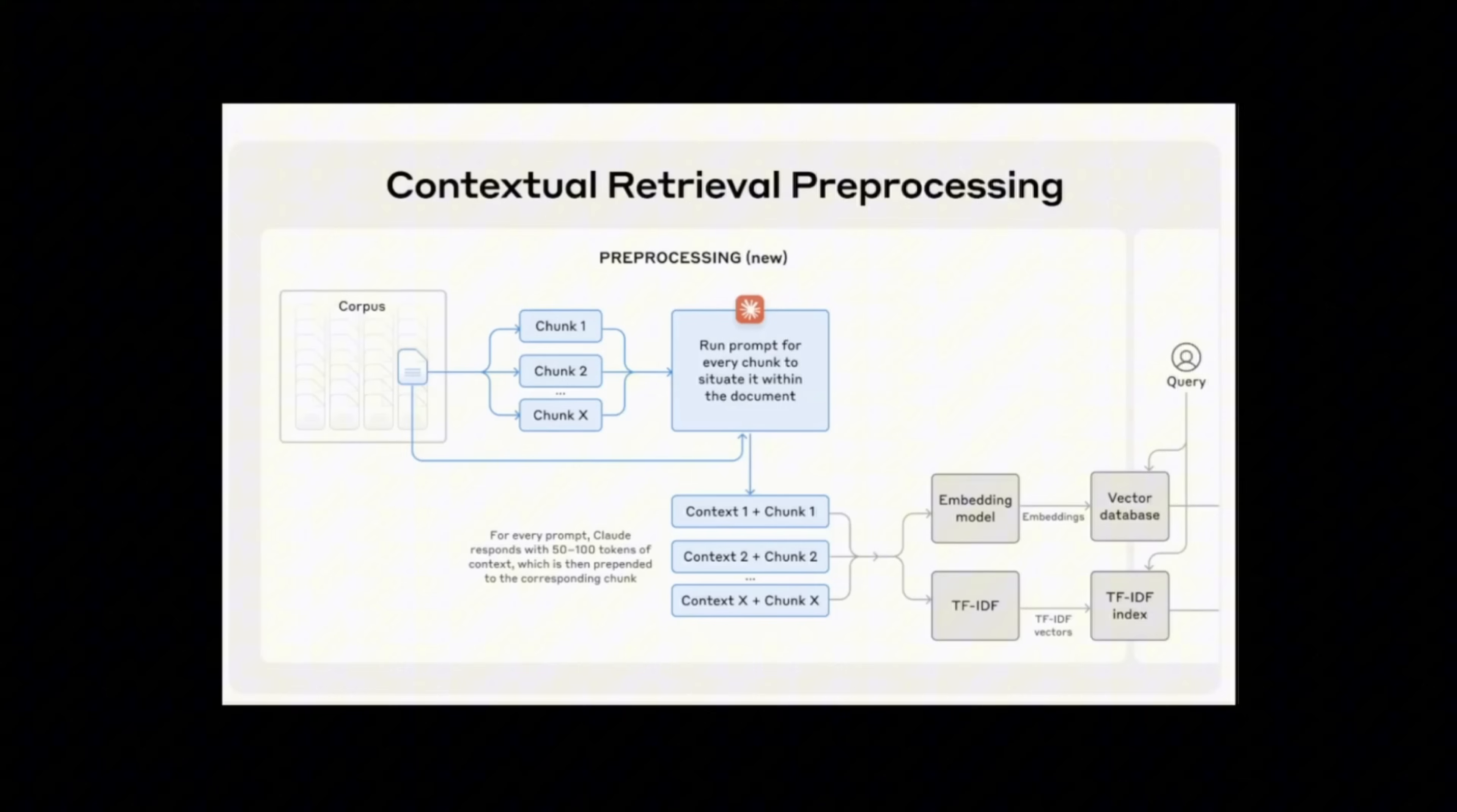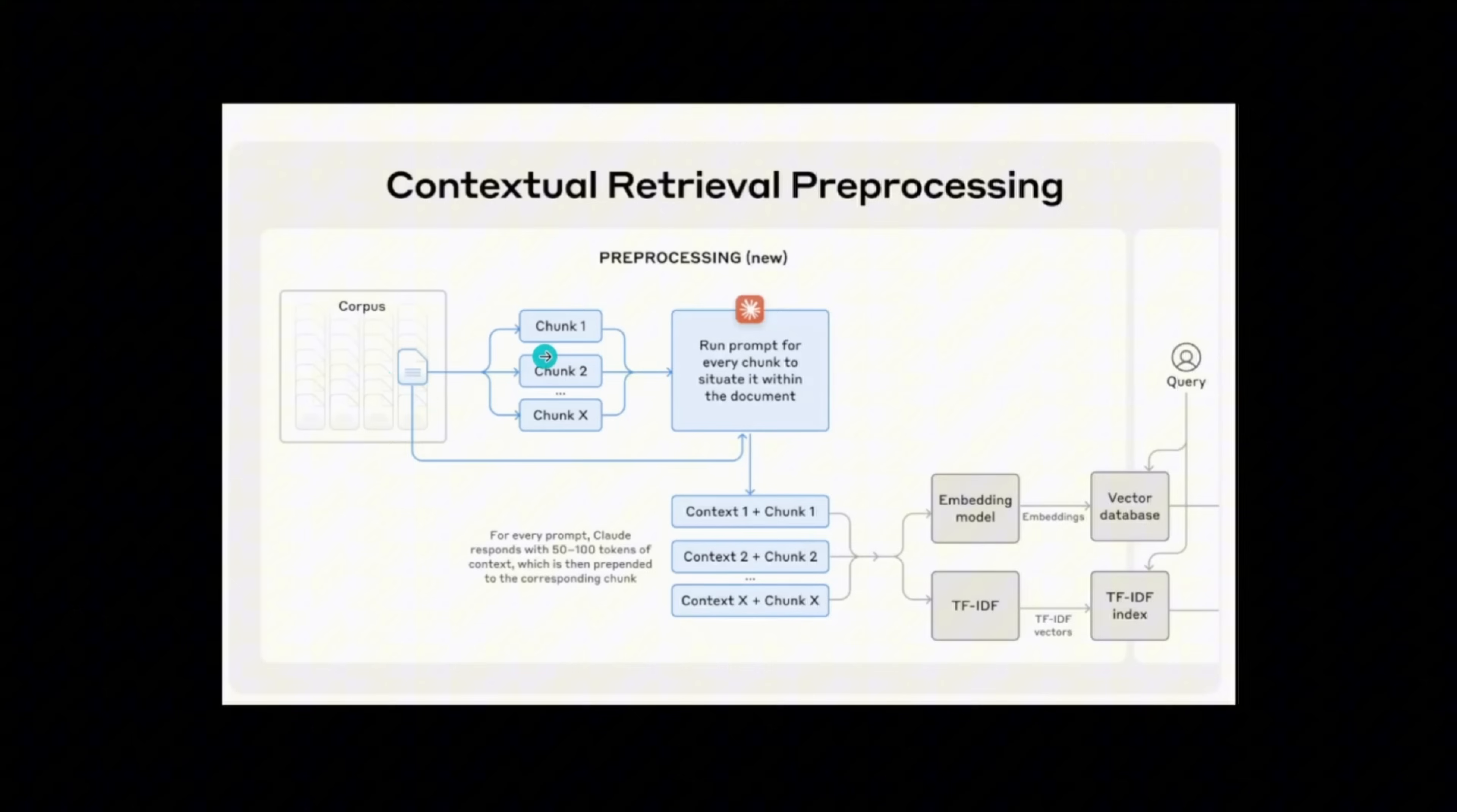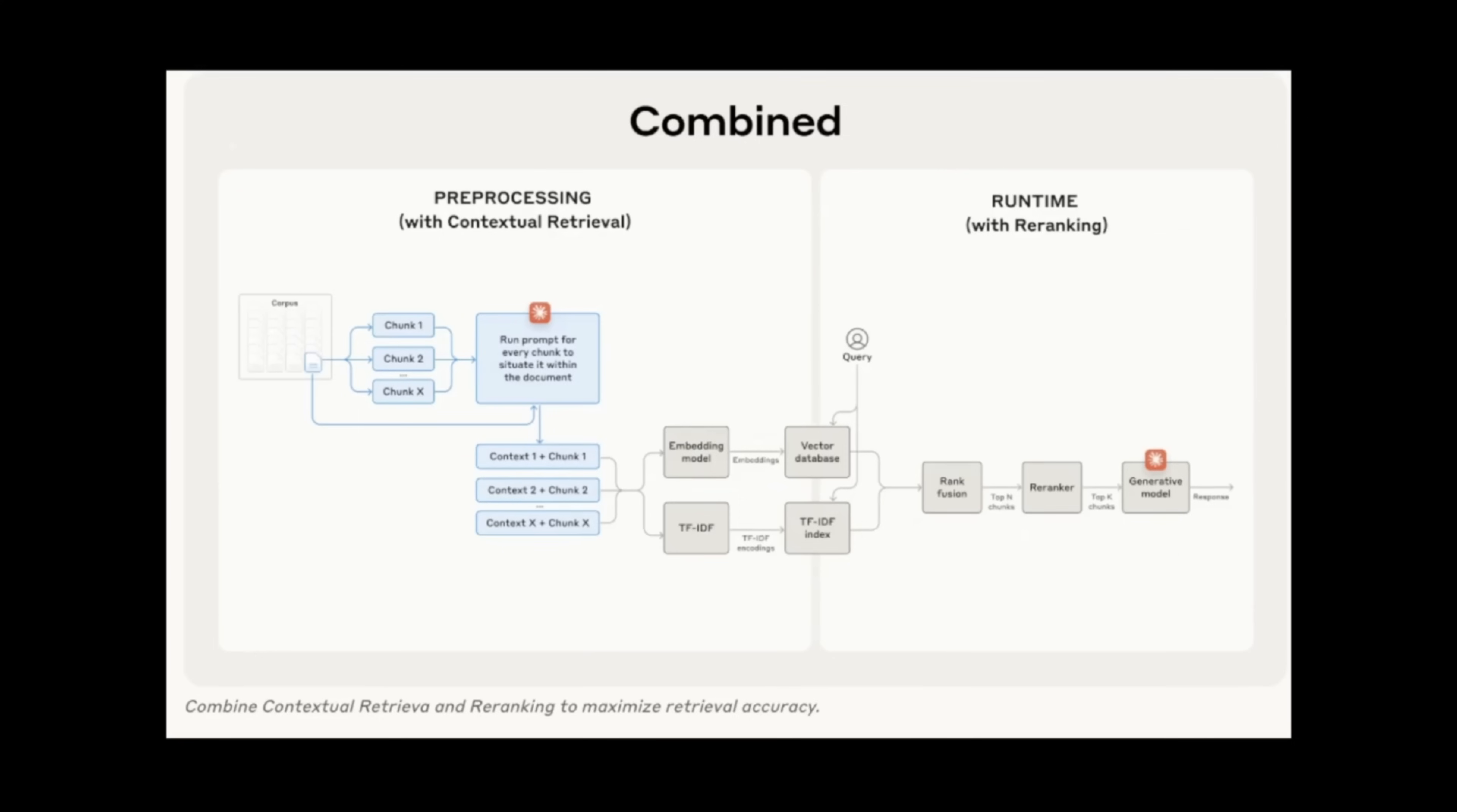There are a number of different approaches in order to add context. One of the most famous one is contextualized retrieval preprocessing. This is an approach proposed by Anthropic late last year. The idea is very simple. You take a chunk, you feed that chunk along with the whole document or surrounding chunks to an LLM, and you ask the LLM to create context around it. Then you add that context to the chunk, the rest of the embedding process and full text search index is exactly the same. At retrieval time, you just retrieve those contextualized chunks.